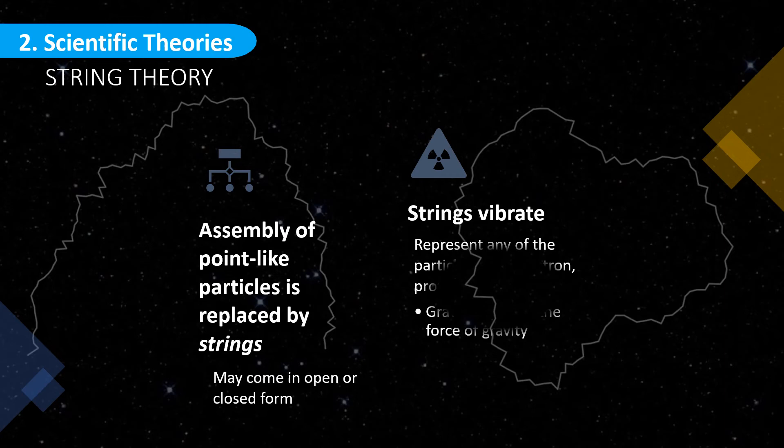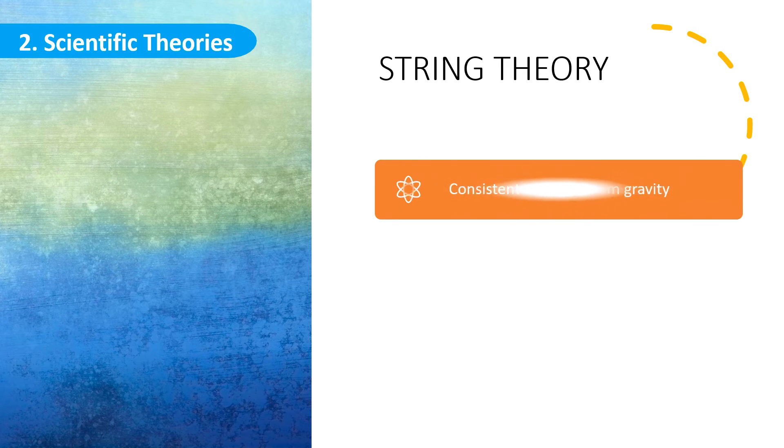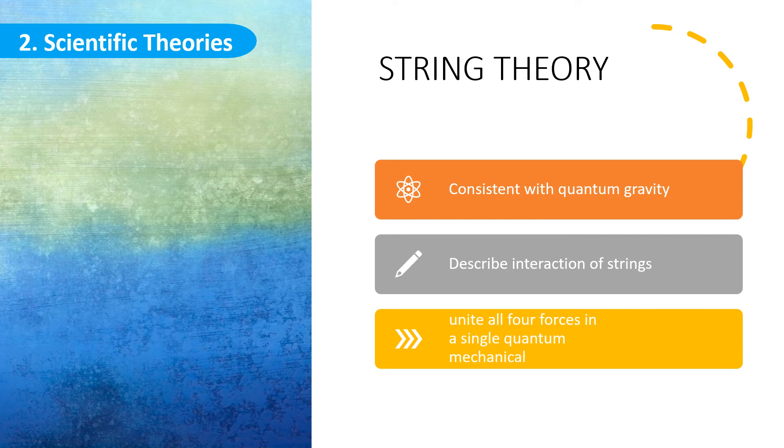The different vibrational modes may represent any of the fundamental particles, such as electron, proton, or even graviton. A graviton is a particle carrying the force of gravity, and the speculation of the graviton is an important reason why the string theory received so much attention. It provided basis in making sense of the interaction of two gravitons. The string theory is consistent with quantum gravity. It is able to describe interactions of strings. It has the potential to unite all four forces in a single quantum mechanical framework that would link all the physical aspects of the universe, and this framework is hypothetically called the theory of everything, or the TOE.